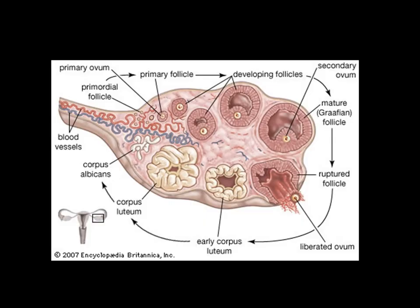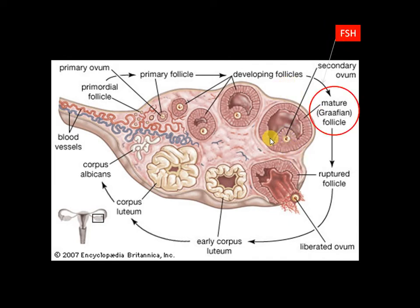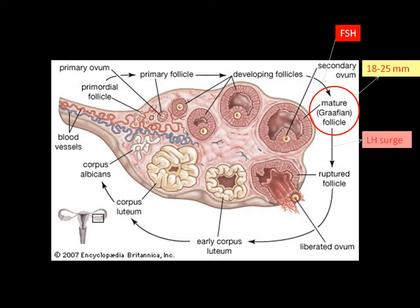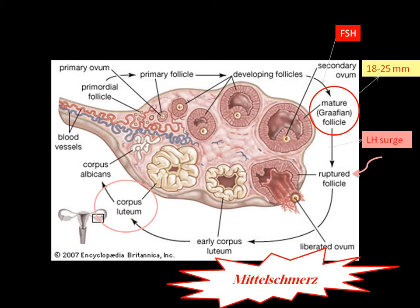Let's start with ovarian disorders. The ovarian cycle begins with the ovum growing under the influence of FSH, becoming a mature Graafian follicle reaching up to 25 mm in diameter. Under the LH surge, ovulation occurs and the remaining structure changes into corpus luteum. Sometimes during ovulation there is a transient acute pain called mittelschmerz pain, which is transient, physiologic, and non-significant.